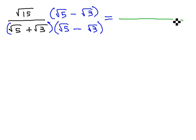As we do that in the numerator, we distribute root 15 times root 5 is root 75, minus root 15 times root 3 is root 45 over.